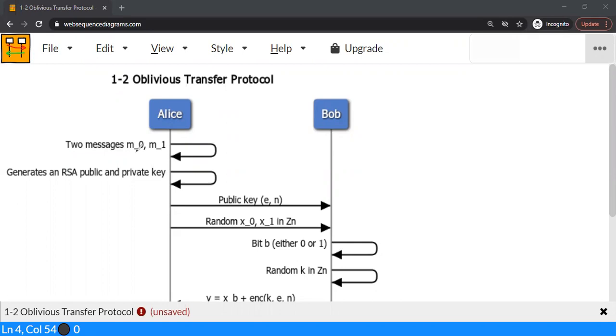Suppose Alice has two messages, let's say M0 and M1. These two are secret messages. Bob wants to obtain one of the two messages, but Bob doesn't want to tell Alice which message Alice should send to Bob. It could be either M0 or M1. Only one message must be transferred to Bob. Bob should not learn more than one message. In this case, we have only two possible messages, M0 or M1.